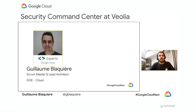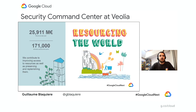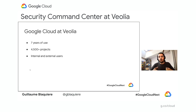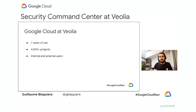Hi everyone, I'm Guillaume Belker. I'm a Google Developer Expert on Cloud Platform, and also a Scrum Master and Lead Architect at Veolia. Veolia is a major French environmental company focused on water, waste, and energy, present in 50 countries in the world with more than 170,000 employees. Veolia has worked with Google Cloud for more than 7 years. Today we have more than 4,000 projects on GCP with internal and external people and partners building solutions in production.